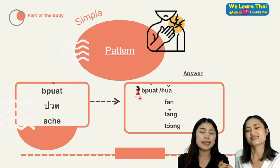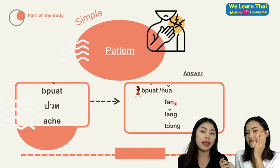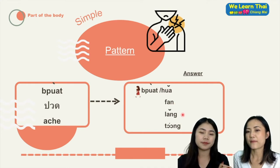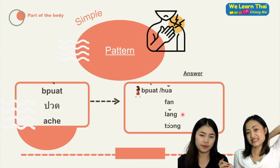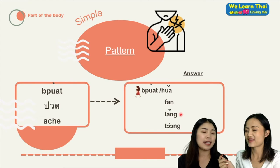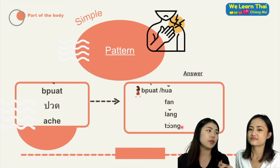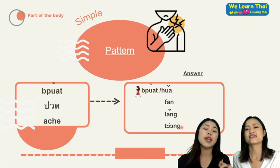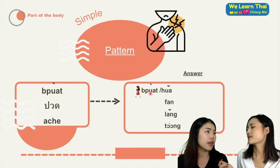You say ดิฉันปวดหลัง for 'I have a backache.' หลัง means back. Or you say ดิฉันปวดท้อง — ท้อง means stomach or belly — meaning 'I have a stomachache.' You use the word ปวด and then combine it with a part of the body.